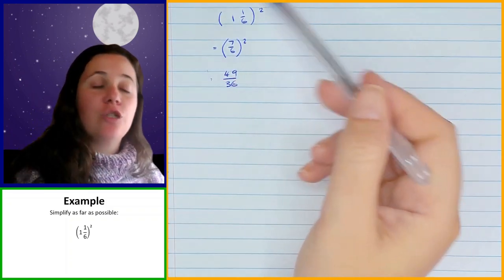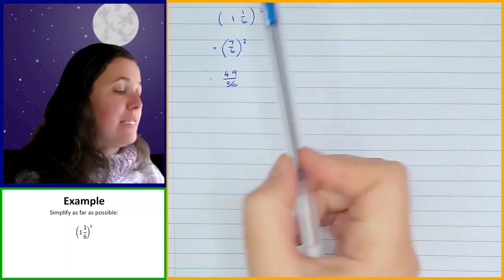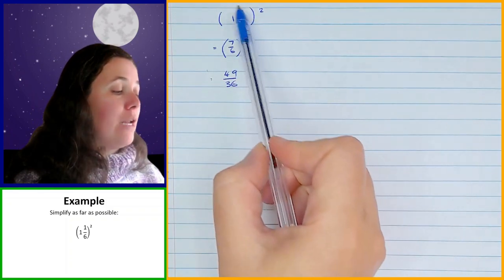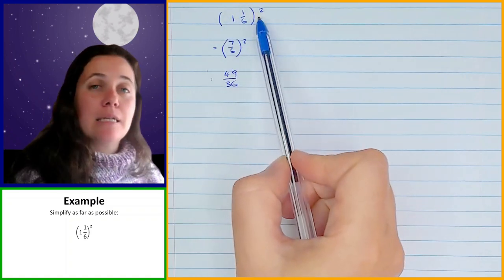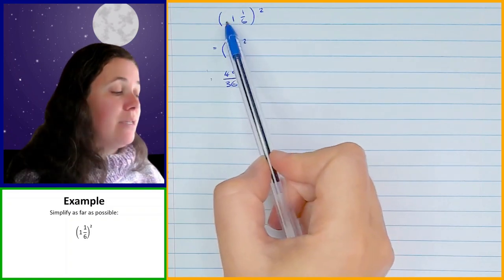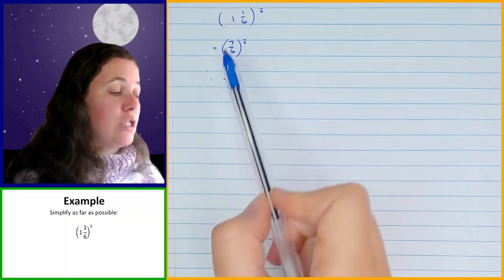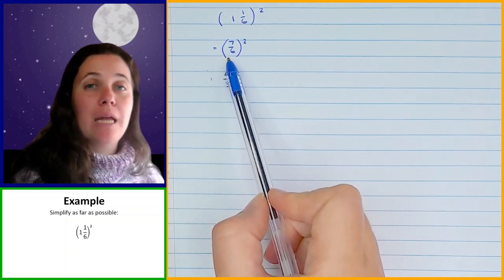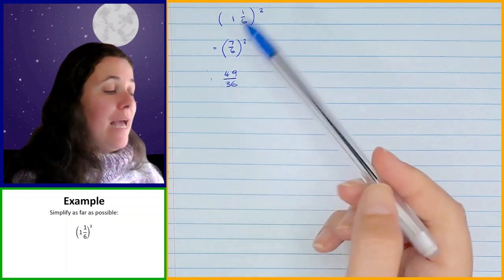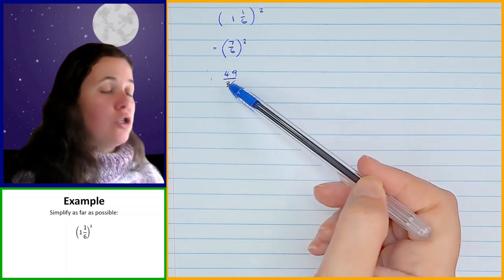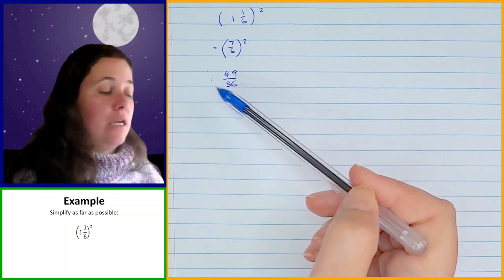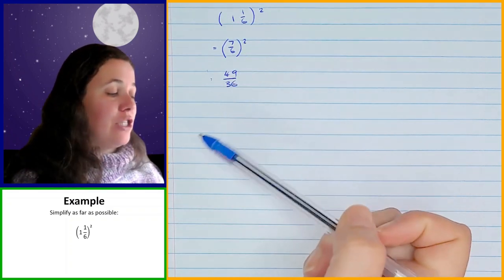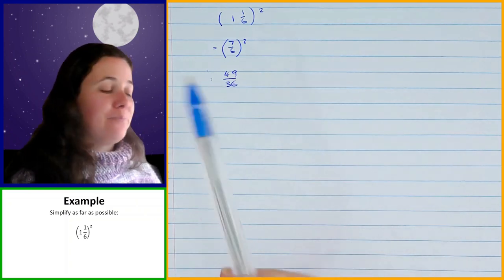So what you're going to do when you have a question like this — if you've got a fraction that's in brackets and it's squared, if it's a mixed number, you first convert it to an improper fraction, and then you apply that exponent to the numerator and the denominator of that fraction.